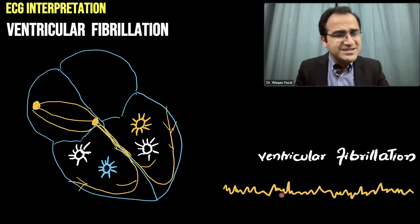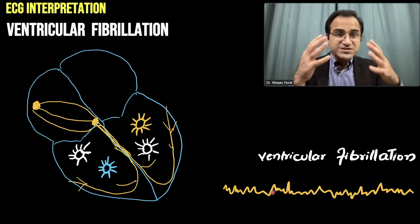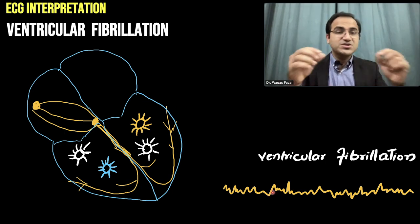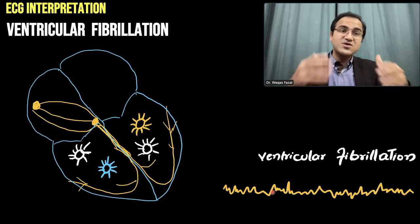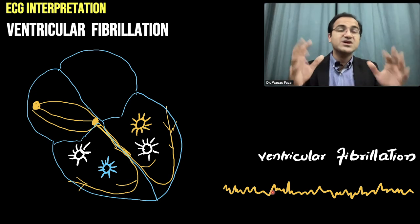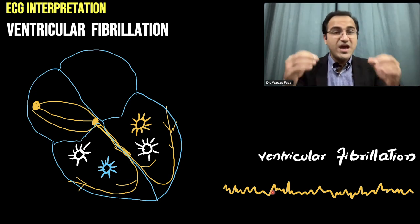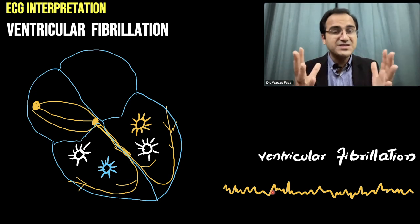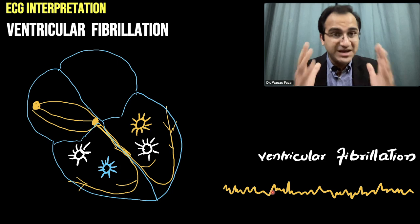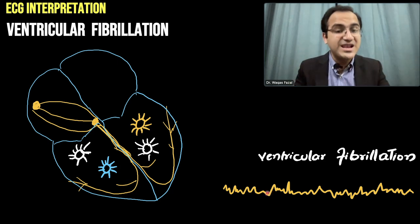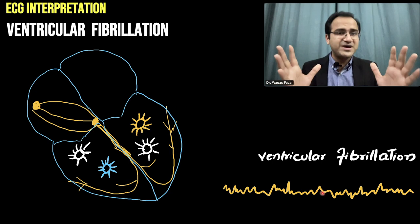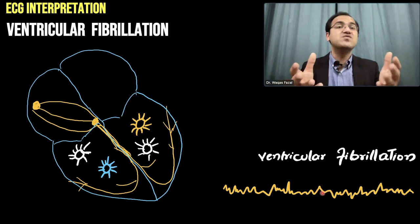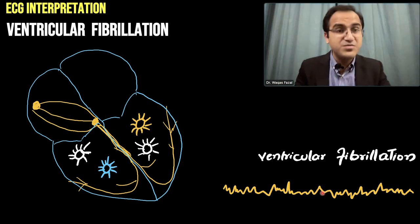What you see on ECG is also an abnormal rhythm — a rhythm that makes no sense. There is no P wave, no QRS, no T wave because everything is gone. Everything is abnormal and haphazard. The electrical rhythm you see on ECG is also very haphazard. That is ventricular fibrillation.